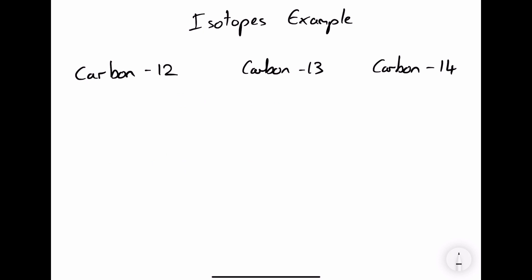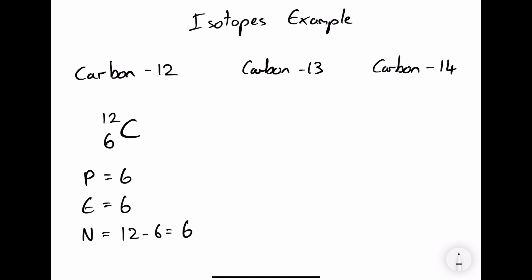Let's look at an example of isotopes. We have three isotopes of carbon: carbon-12, carbon-13, and carbon-14. The atomic number of carbon-12 is 6 and the mass number is 12. This means carbon-12 has 6 protons. It's neutral, so it has 6 electrons, and 12 minus 6 gives 6 neutrons.